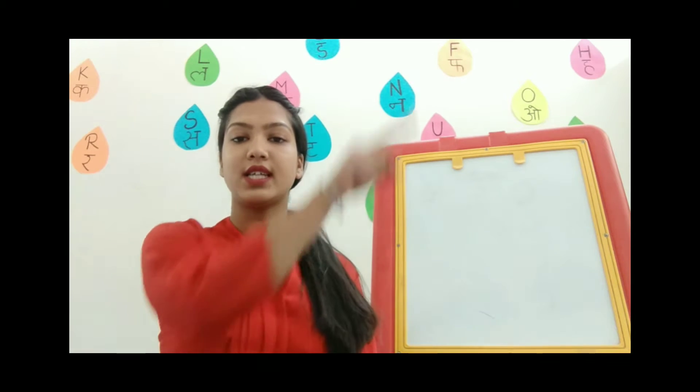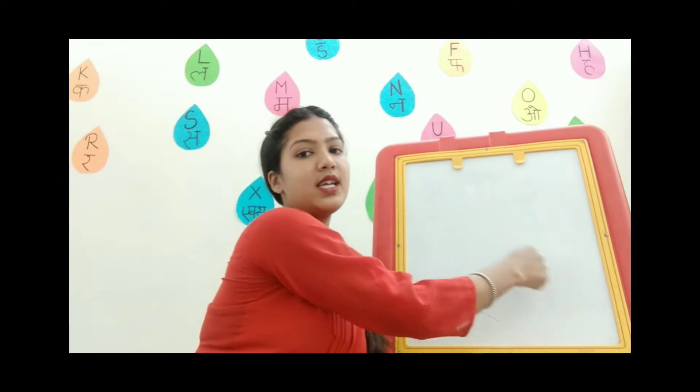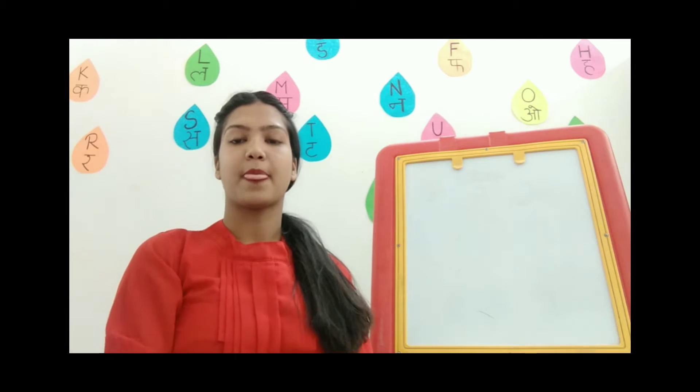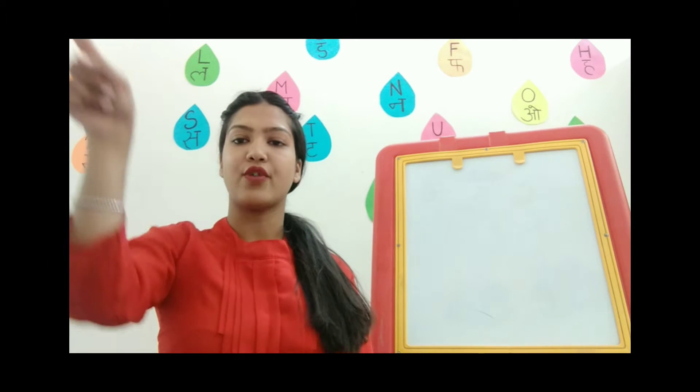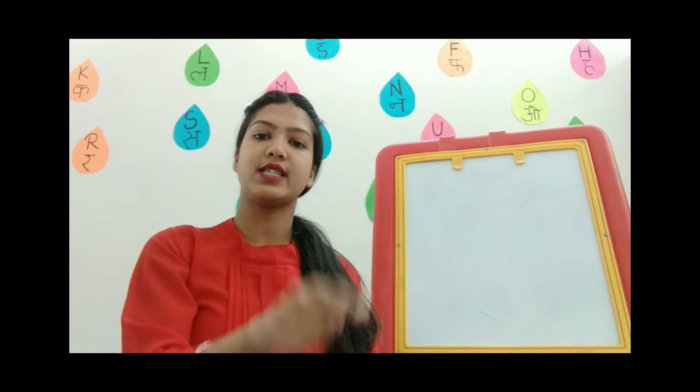Very good. Today we are going to learn slanting line. Like this — slanting line. Again slanting line. Say slanting line. Very good. From left to right and from right to left also. Slanting line. Very nice. Now again, slanting line. Very good. With your finger, slanting line and slanting line. Now again: standing line, sleeping line, slanting line, slanting line. Very good.